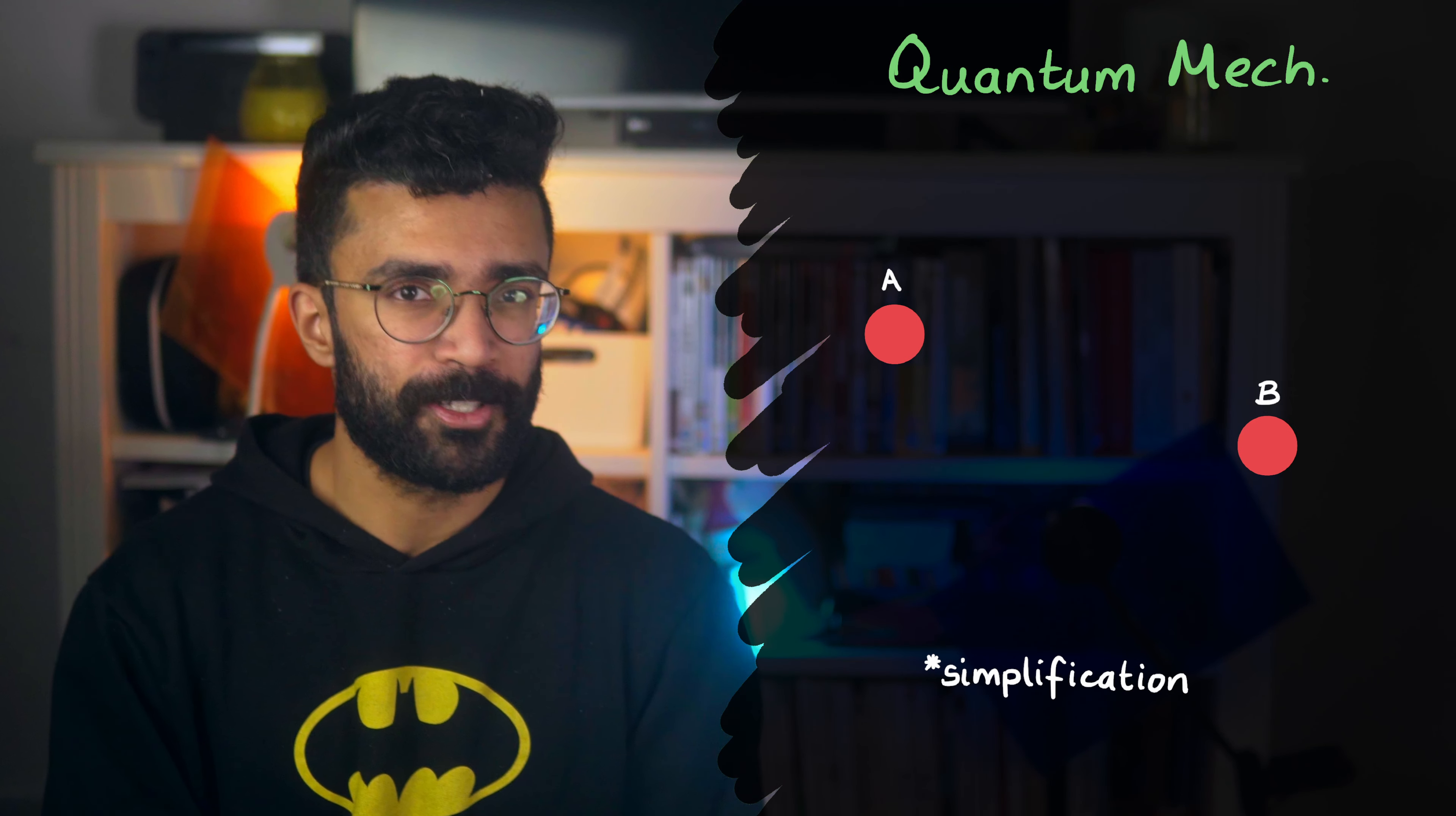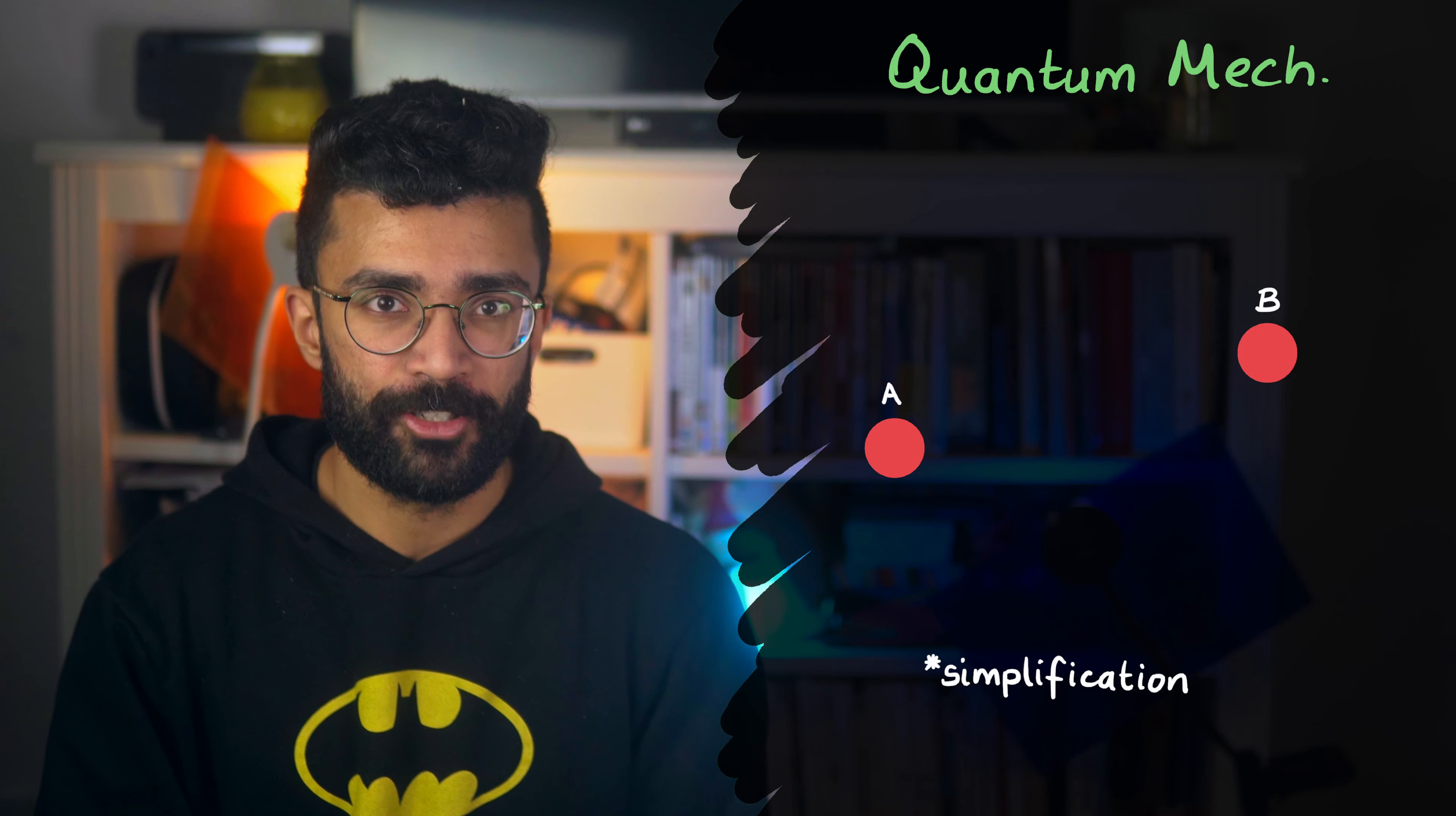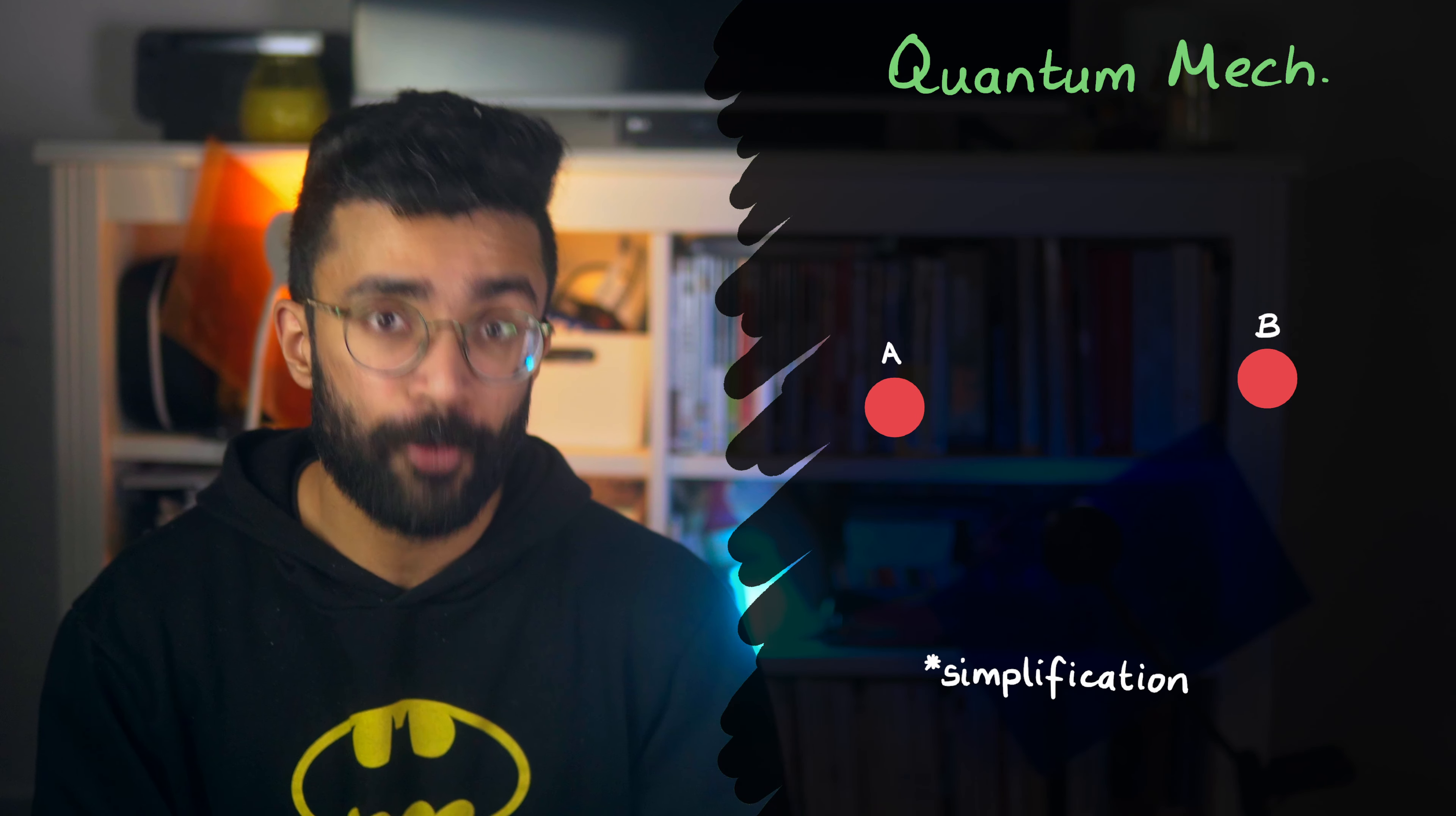However, in quantum mechanics, systems of particles separated by large distances can seem to change together at exactly the same time. For example, if someone changes something about particle A here, then particle B also instantly changes, rather than the change occurring a few moments later, once information is transmitted to it from particle A.